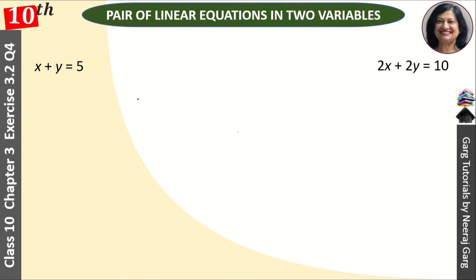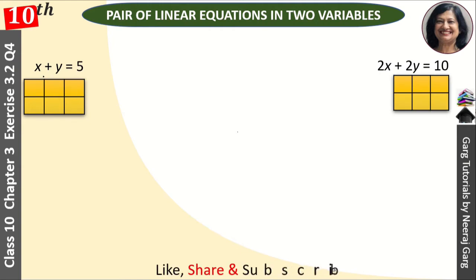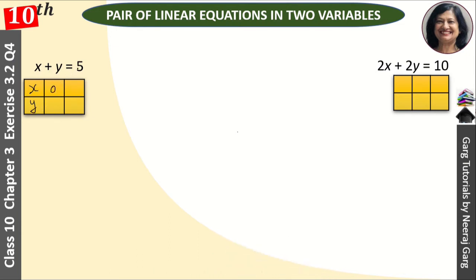Since it is consistent, we will plot a graph. For the equation x plus y equals 5, let's find points. When x is 0, y is 5. When y is 0, x is 5. We can also take: when x is 2, y is 3; and when x is 1, y is 4.